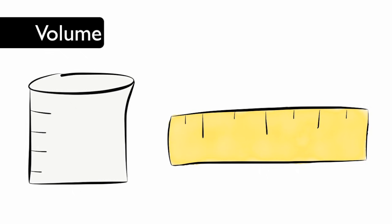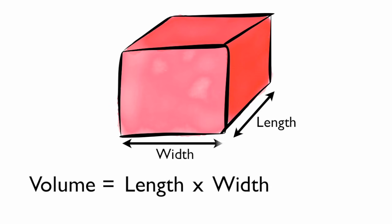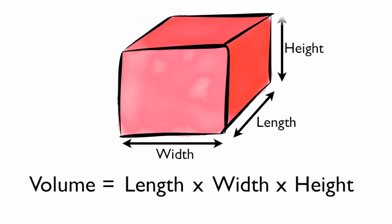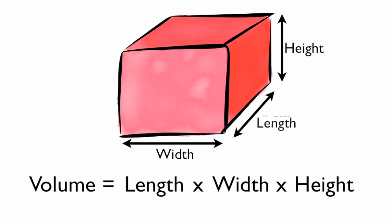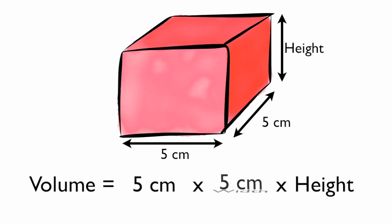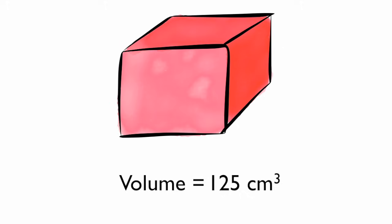To find the volume of the filter, we use the formula: volume equals length times width times height. Using a ruler, we take measurements. The measured value for length is 5 centimeters, the width is 5 centimeters, and the height is 5 centimeters. Our calculated volume is 125 cubic centimeters.